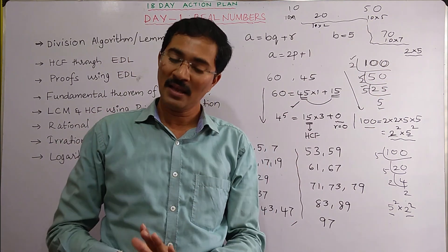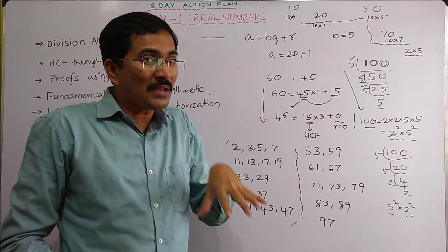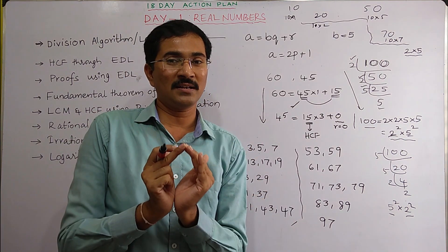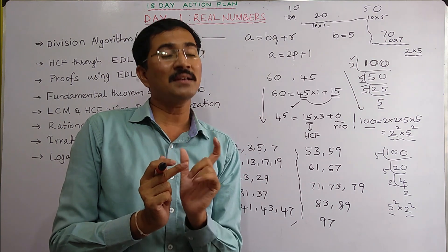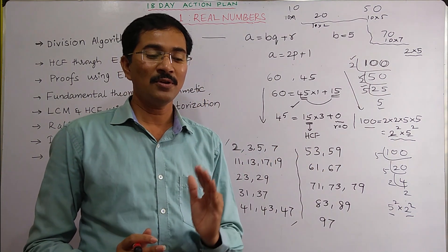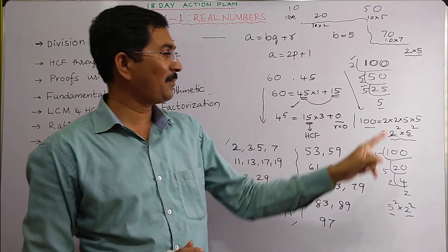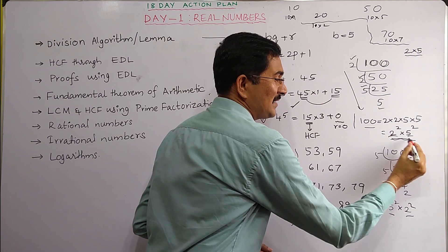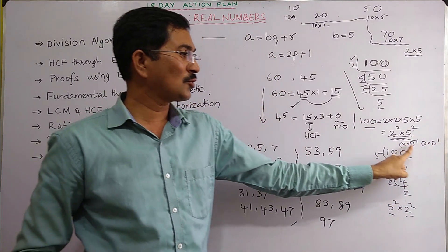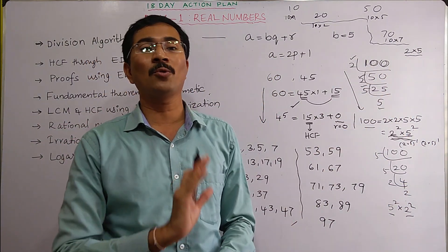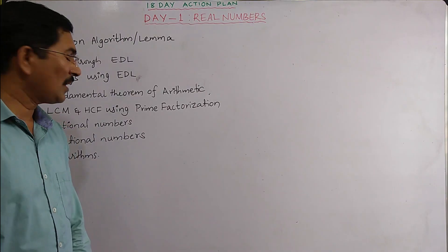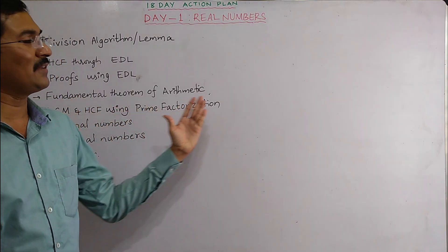When a number's prime factorization contains one pair of 2 and 5, it ends in one zero. If there are two pairs — for example 2×5 and another 2×5 — it ends in two zeros. So for 100 = 2²×5², there are two pairs, giving two zeros. Depending on the number of 2-and-5 pairs in the prime factorization, we can decide how many trailing zeros a number has.